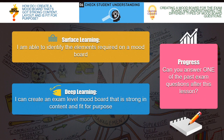Our surface learning objective is: I am able to identify the elements required on a mood board. Our deep learning outcome is: I can create an exam-level mood board that is strong in content and fit for purpose. We will say that we've made good progress today if you can answer the past exam questions after the lesson. At the end of today's lesson you are going to have a go, and if you can answer it competently and confidently, you will be making good progress.